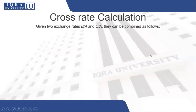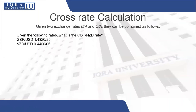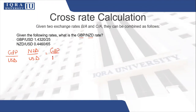Cross rate calculation given two exchange rates that can be combined: we need to calculate the GBP to NZD rate. We are provided the GBP to USD and the NZD to USD rates. Write it first in fractional form. What you require is GBP over NZD. GBP is in the numerator — that is fine. But NZD is also in the numerator, not the denominator, so you will have to take the reciprocal of the NZD to USD rate.